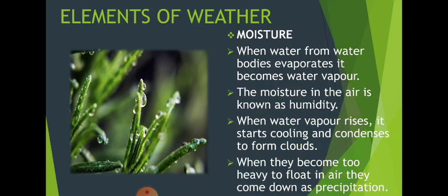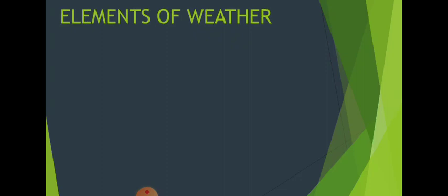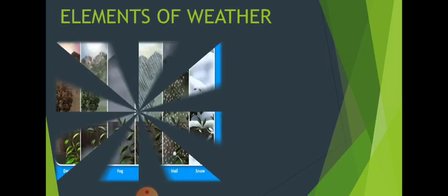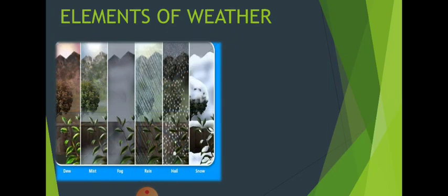These forms can be hailstorms, hail, mist, fog, dew, snowfall, and rainfall. Here you can see different images of different types of precipitation — dew, mist, fog, rain, hail, snow, etc.